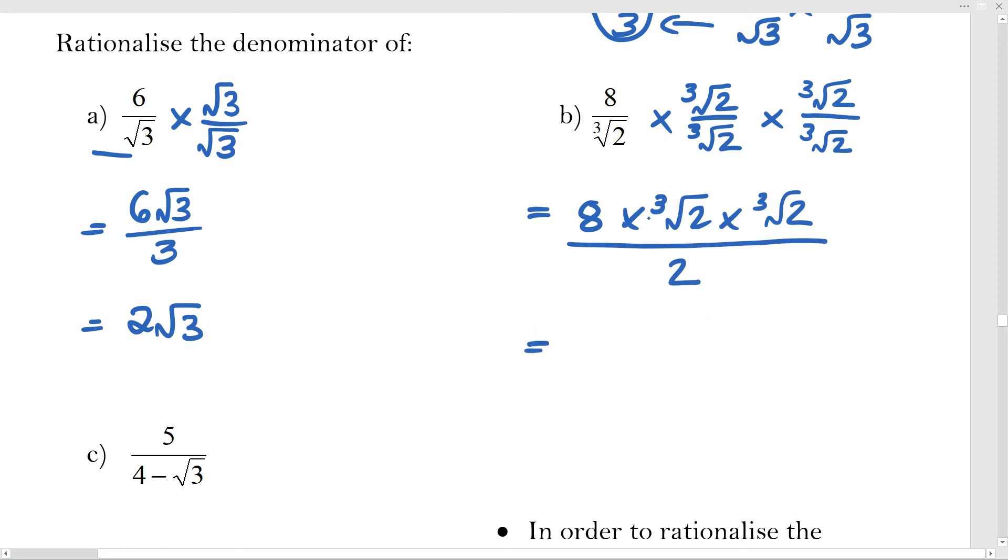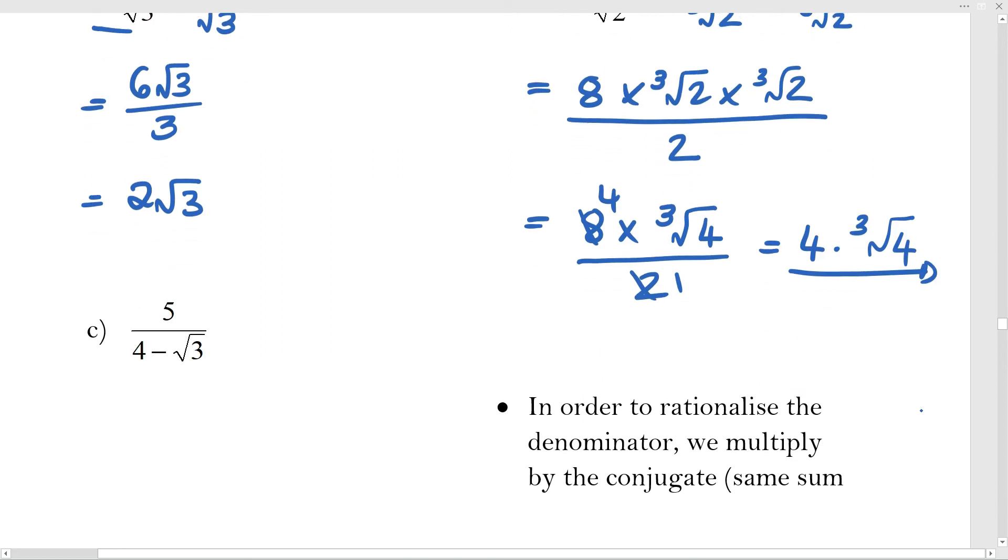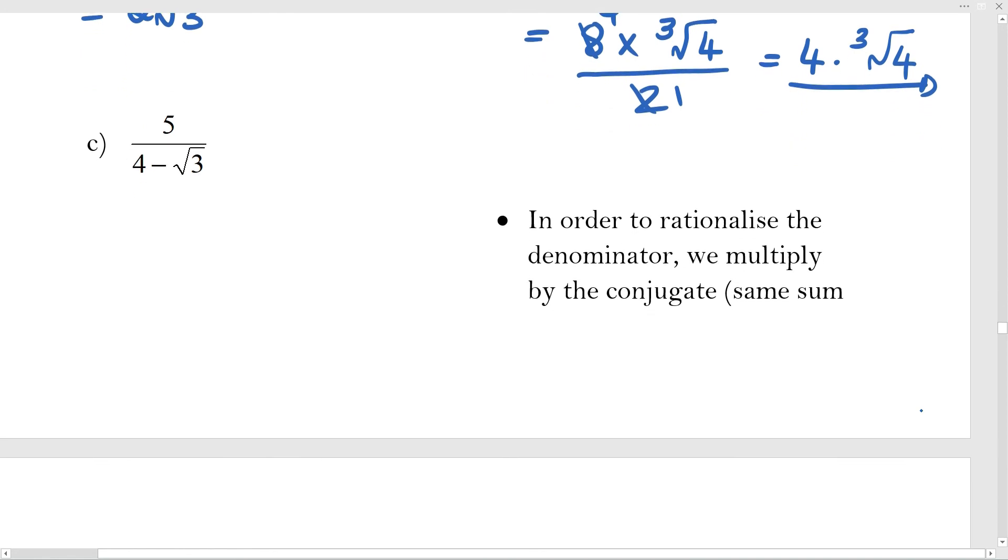So how do I do this? How do I do cube root of 2 times cube root of 2? Well, it's the same root. So that's just going to give me cube root of 4, which of course doesn't have a cube root. So that's going to give me something a little bit less than pretty. The 8 and the 2 cancel very nicely. So my answer is actually then 4 times the cube root of 4 over 1. So I can just leave it like that.